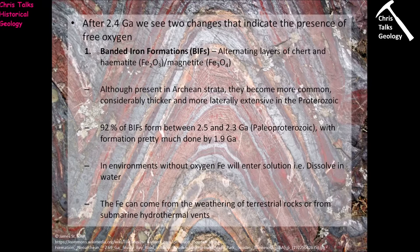Although we have banded iron formations present in very late Archean strata, they become far more common, considerably thicker, and more laterally extensive in the Proterozoic. About 92% of them formed between about 2.5 and 2.3 billion years ago — the very earliest portion of the Proterozoic. We do have a few banded iron formations appearing later, all the way to 1.9 billion years ago, but the vast majority formed between 2.5 and 2.3 billion years ago.